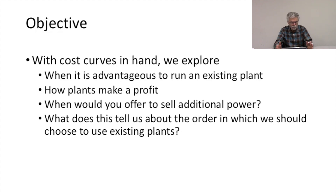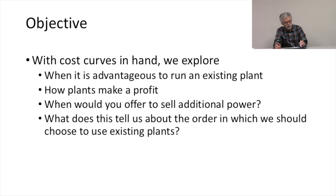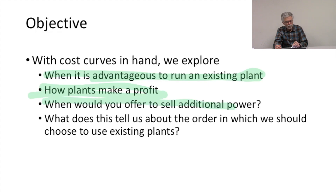We have our cost curves in hand, so now we're going to ask: when is it advantageous to run an existing plant? How do plants make a profit? When would you offer to sell additional power? And what does this all tell us about the order in which we should choose to use our existing plants?